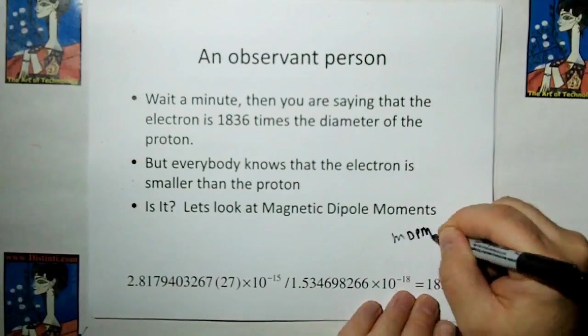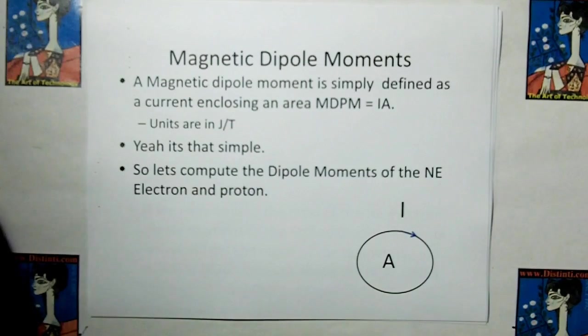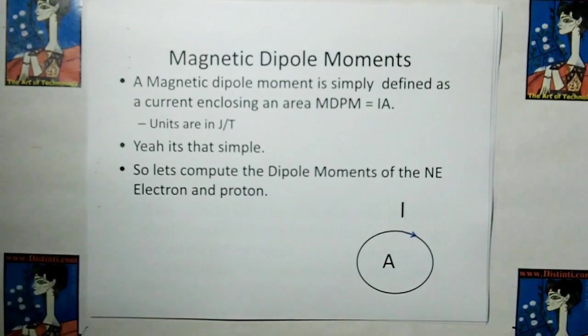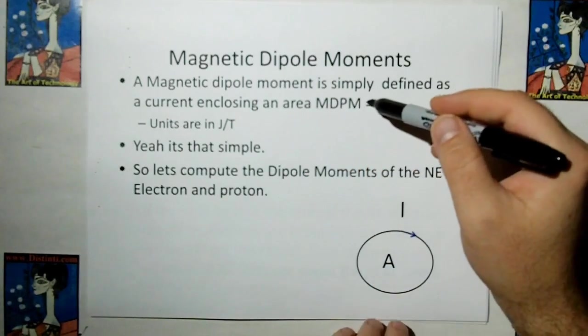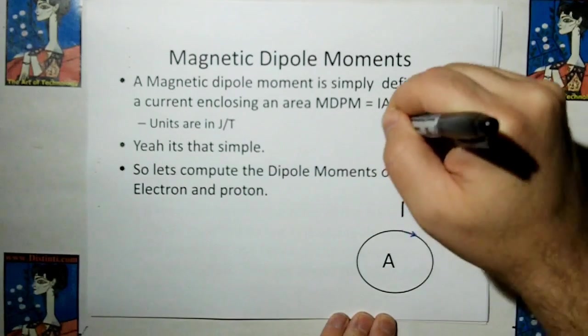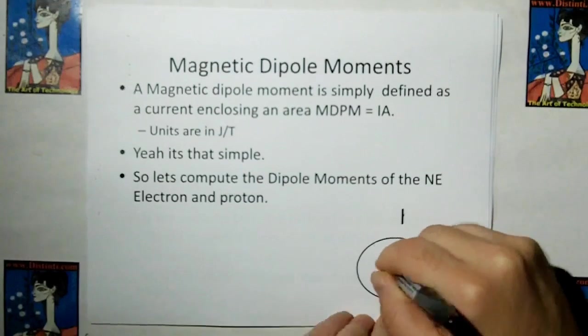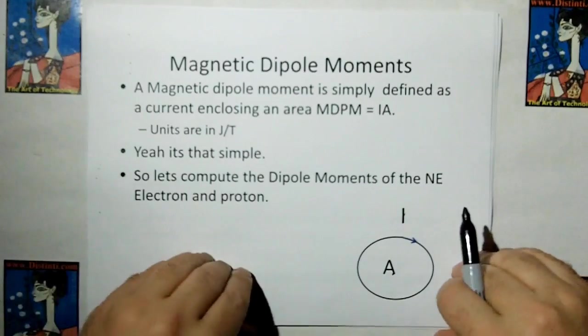I'm going to call it MDPM in the later pages. What's a magnetic dipole moment? Magnetic monopoles do not exist. This is a magnetic dipole. A magnetic dipole moment is simply defined as a current enclosing an area. Simple as that. If you've got a current running around in a circle in an area, then all you have to do is multiply the current times the area, and that's your magnetic. It's as simple as that. So let's compute the dipole moments of the new electromagnetism electron and proton.